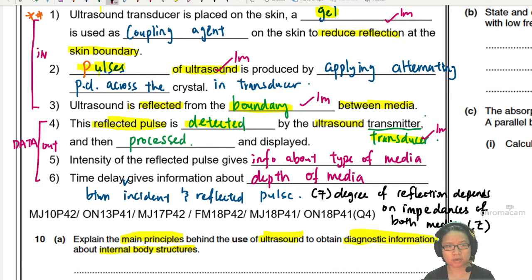This one here is one mark. And then you talk about the intensity. Intensity will give information about the type of media. This is one mark. And time delay will give you information about the depth. So time delay relating to depth, that would be another one mark. Normally, six mark. How many already? One, two, three, four, five, six. We have six already.